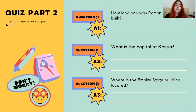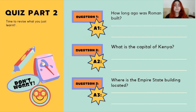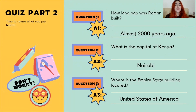Let's try again with the second quiz. The first question is: how long ago was the Roman Colosseum built? The second question is: what is the capital of Kenya? And the third question is: where is the Empire State Building located? Take your time to answer these questions. The answers are: the Roman Colosseum was built almost 2000 years ago; the capital of Kenya is Nairobi; and the Empire State Building is located in the United States of America.